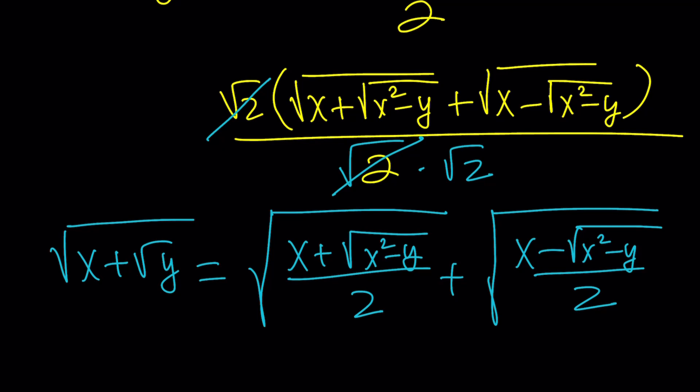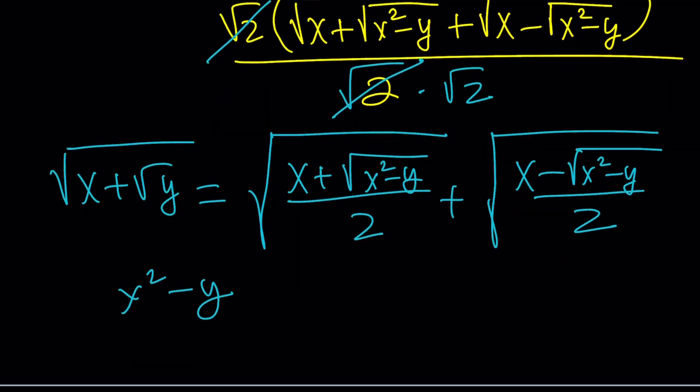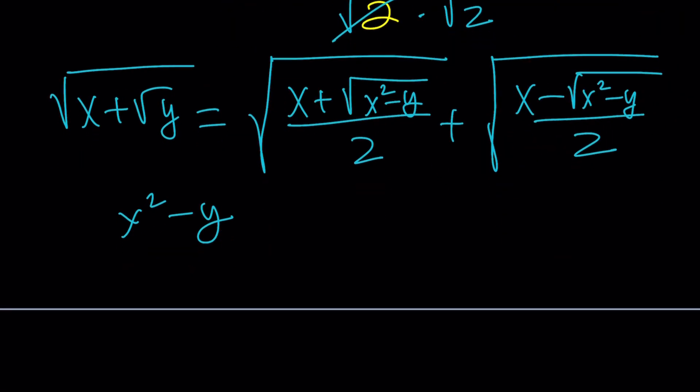Again, if x squared minus y is not a perfect square, then you cannot denest this. You want x squared minus y to be a perfect square.